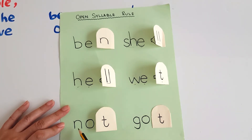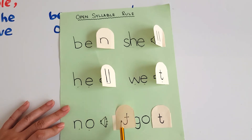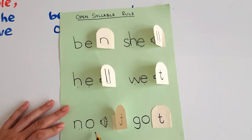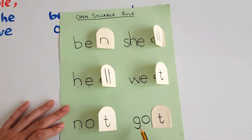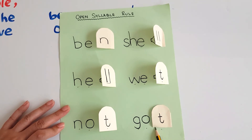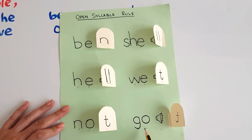Here we have the word N-O-T: 'not.' If I open the door, the vowel will shout out its name and it will be N-O: 'no.' Then G-O-T: 'got.' The vowel is blocked with a consonant, but if I open the door, the vowel will say its name: G-O: 'go.'